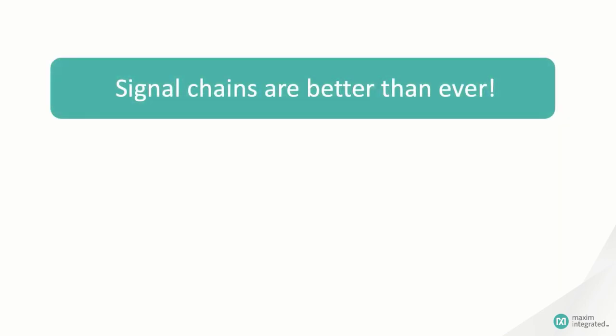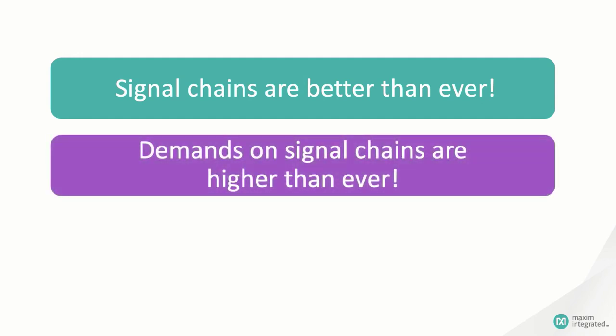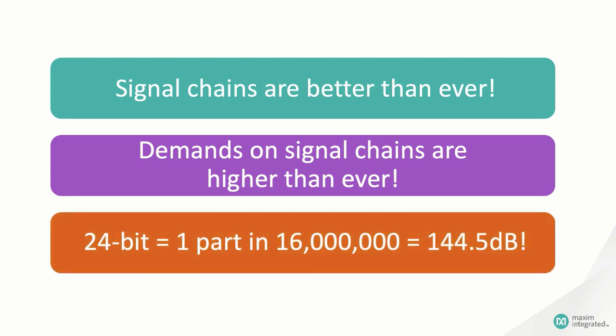In one sense, signal chains have never been better. The errors one used to expect in precision amplifiers have been greatly reduced, but the demands on those amplifiers have only grown as high-resolution digital systems have become more common. It's not unusual to find 24-bit analog-to-digital converters, and to support that resolution, the rest of the signal chain has to be just as precise.